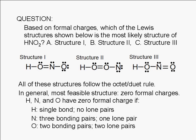In general, the most feasible structure is one where all the atoms have zero formal charge. Let's examine these structures. A hydrogen atom has a zero formal charge if it has only one single bond and it doesn't have a lone pair. That is the case in all structures.